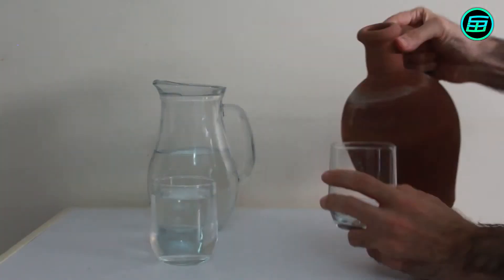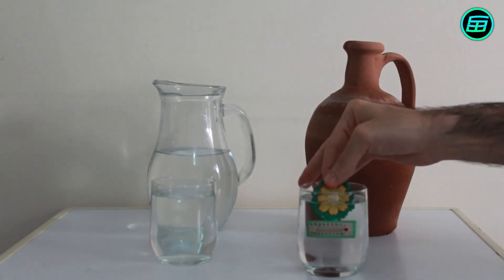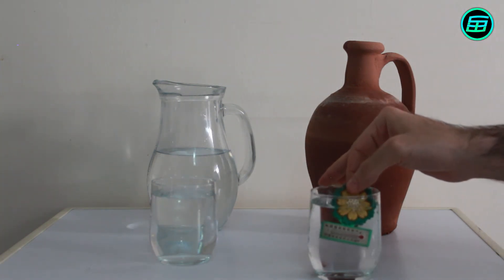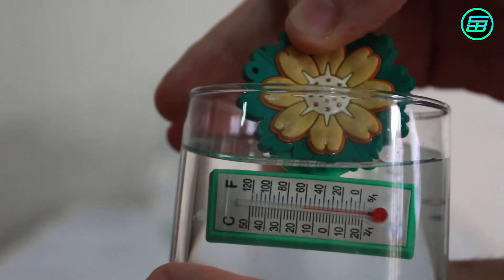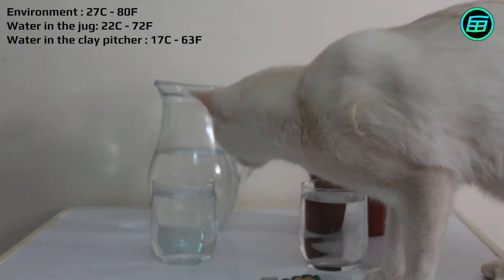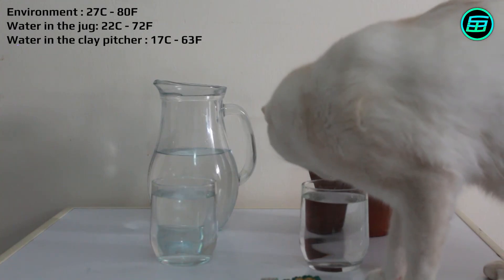Finally, we'll measure the temperature of water in the clay pitcher. And we see that it's 17 Celsius or about 63 Fahrenheit. That's a difference in temperature between the water in the jug and in the pitcher of 5 degrees Celsius or 9 degrees Fahrenheit.